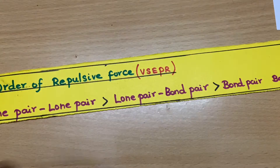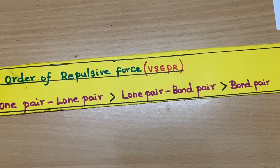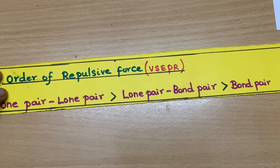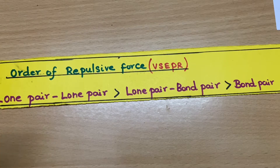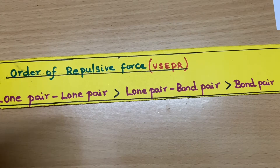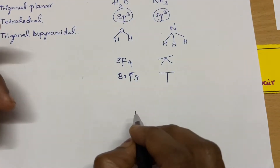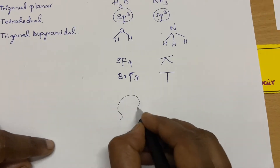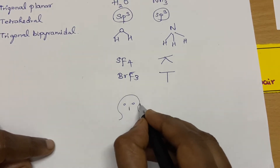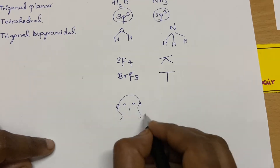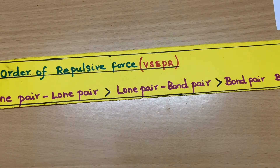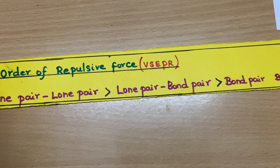Any molecule will take geometry according to the VSEPR theory. What is the rule of VSEPR theory? A molecule must experience a minimum repulsive force and it must look very symmetrical. Symmetry is a rule of nature. In our face, we have two eyes, one nose, two ears — our face looks very symmetric. So a molecule must experience minimum repulsive force as well as it must look very symmetric.